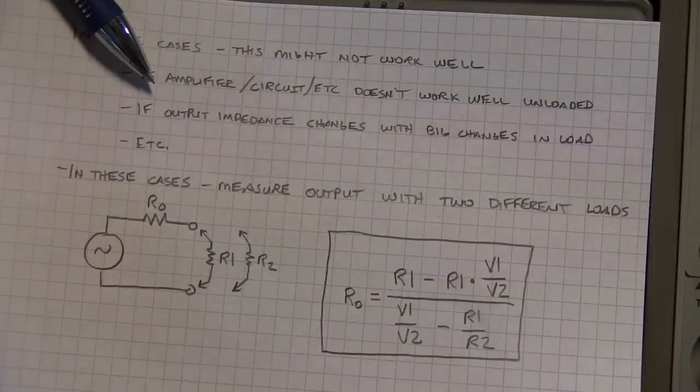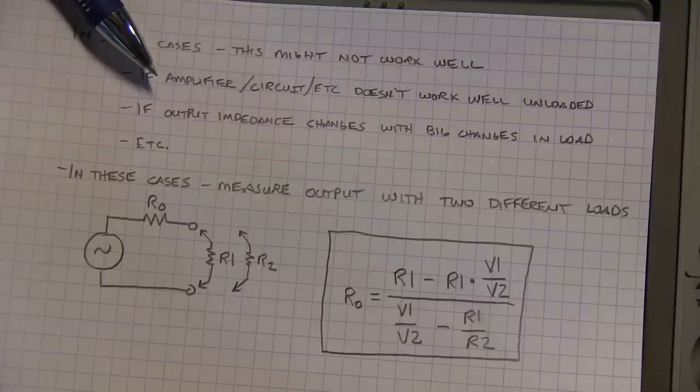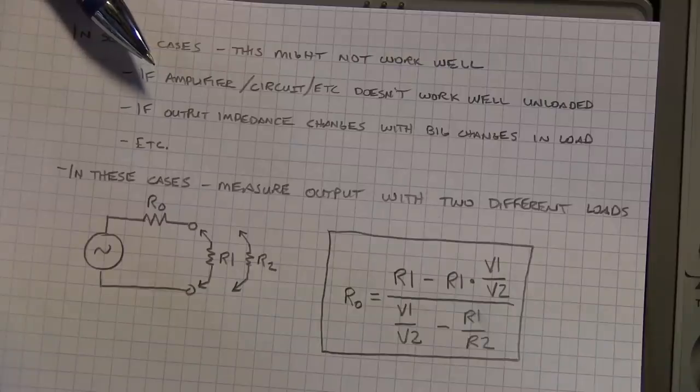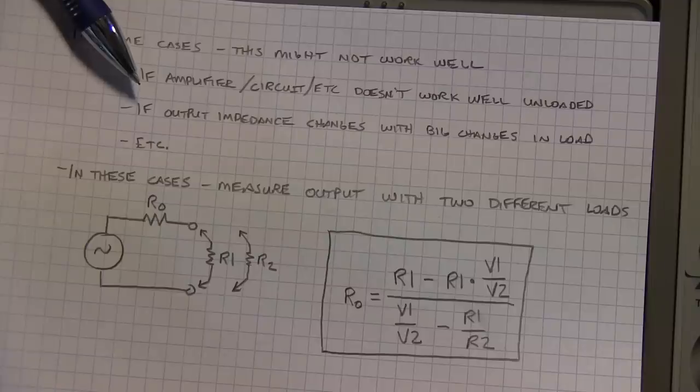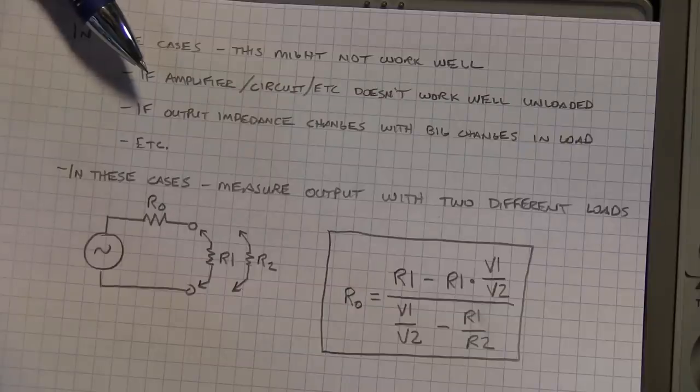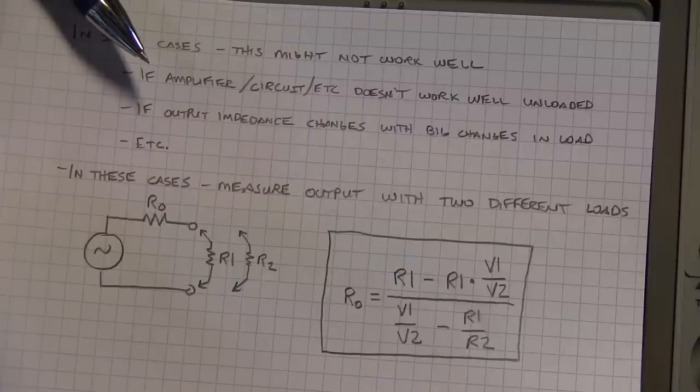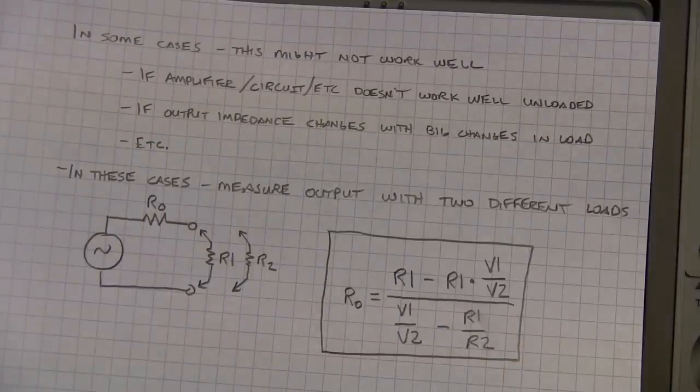Or if the output impedance of the circuit changes with large changes in load. If you go from an open circuit to some low impedance load that's a big change in load impedance and in many cases the output impedance of a circuit might change with such a large change. And what you're really interested in is what the output impedance is under normal operating circumstances.